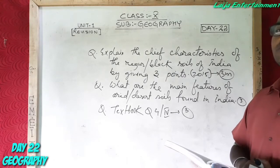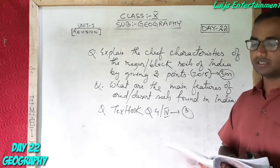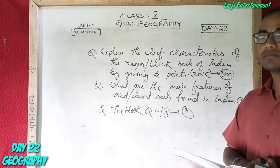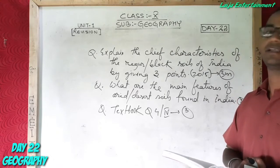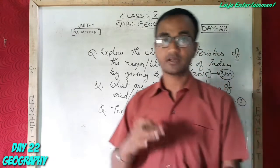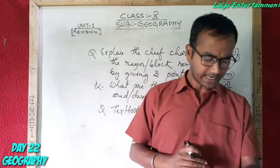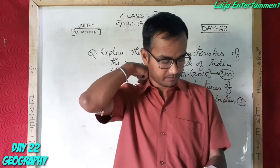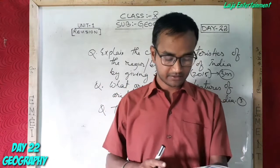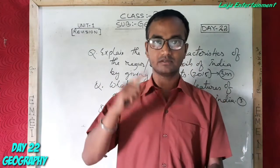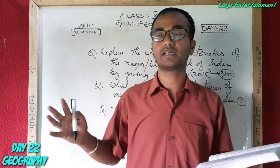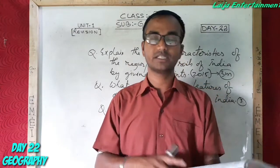What are the main causes of soil erosion? It is caused by natural agents like running water and wind. The process is aggravated by human activities.